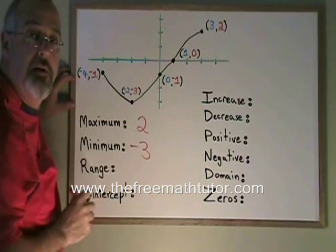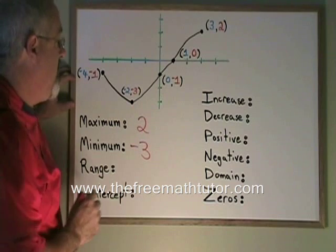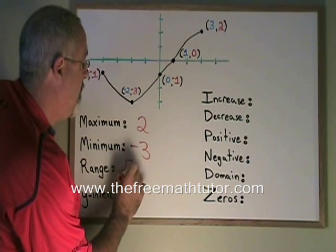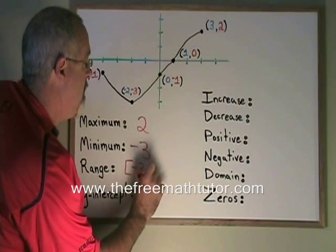The same numbers we use to calculate our minimum and our maximum. So the range of this curve is going to be the interval from negative 3 to positive 2.